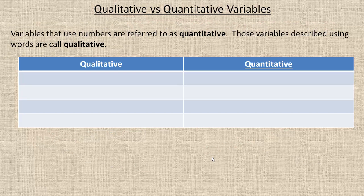On the next page we're going to talk about qualitative versus quantitative variables. Variables that use numbers are referred to as quantitative. Notice that the first several letters are the same as in the word quantity. Something numerical has a certain quantity to it. Those variables described using words are called qualitative, like the word quality. What we're going to do in this table is take all of those variables that were listed on the bottom of the last page. There were seven of them, and list them as either qualitative or quantitative.